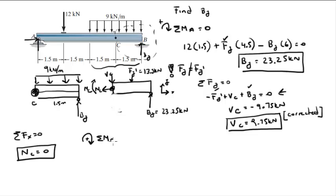Last but not least is the moment. Assuming clockwise is positive, sum of the moments at C equals zero. The moment plus the moment created by Fy prime, which is 13.5 times 0.75 meters, minus By times 1.5 meters equals zero.